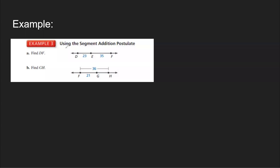Example: find DF. You can see that DF is made up of segment DE and EF. DE is 23 and EF is 35, and if you add them you get 58. So DF is equal to 58.